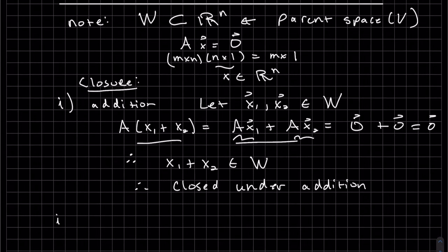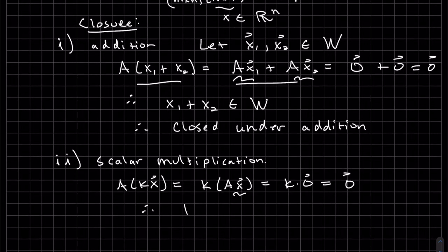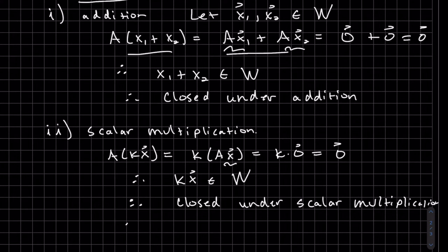Now let's look at scalar multiplication. Plug in KX. We know the K can come out because it's a constant. This is 0, so it's K times 0, which is 0. Therefore, KX is an element of W. Therefore, it's closed under scalar multiplication. Therefore, both closure properties are satisfied.